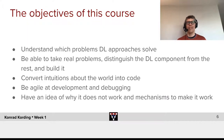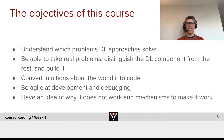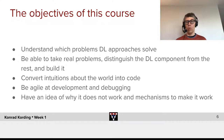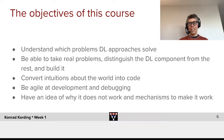After seeing the most hyped part of deep learning in the previous week, what are the objectives overall? The first one is we want you to really understand which problems deep learning approaches can solve. We want you to be able to take real problems, distinguish the parts that can best be solved with deep learning versus other components — often symbolic — and be able to build it. We want you to be able to convert intuitions you have about the world into code, be agile in development and debugging, have an idea of why it doesn't work if it doesn't work, and have mechanisms to make it work.